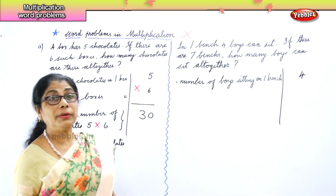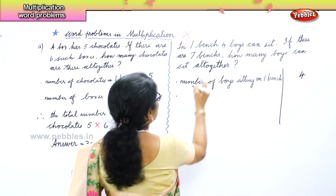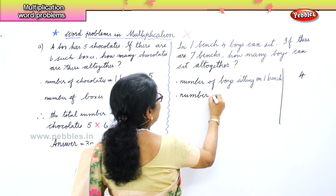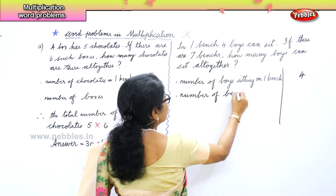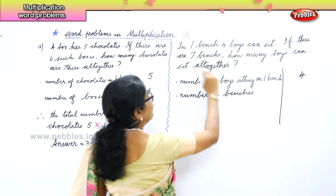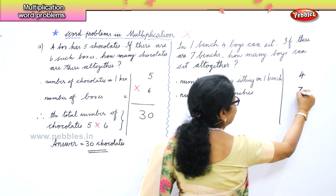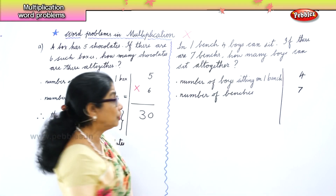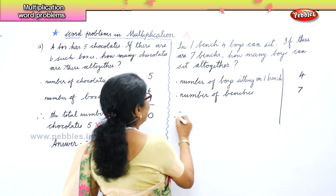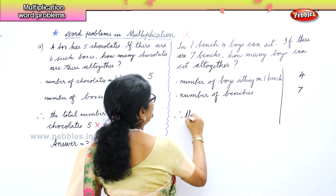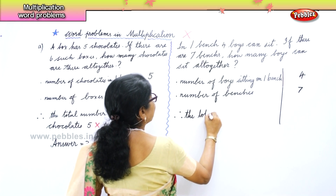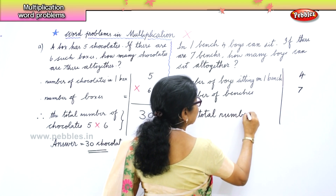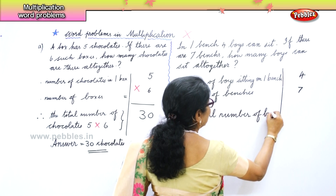The total number of benches is seven. So the next statement: number of benches equals seven. And what are you asked to find out? How many boys can sit altogether? Therefore the total number of boys.